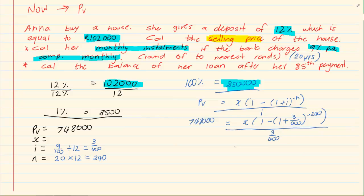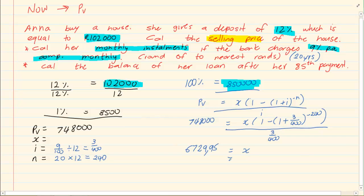Using your algebra, you can solve for x and x is going to equal to 6,729,95 but then they say round it off to the nearest rand. They don't usually say that in an exam. So, if you don't round it off, you would still be okay. But let us round it off in this question.